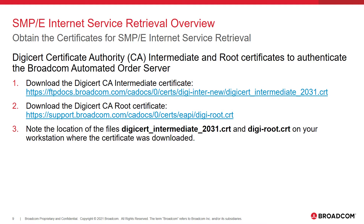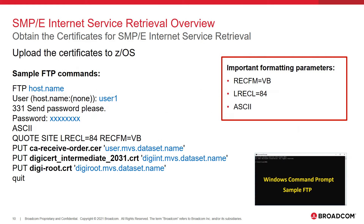Next, we will need to download the two server certificates by going to the two websites listed. These links will be provided in a text file that accompanies this presentation. Be sure to take note of the location of the certificate files on your workstation. It will make things easier during the upload process if all three certificates are in the same location. After downloading the three certificates, it is time to upload them to z/OS. You may choose whatever method you would like, but there are important formatting parameters to keep in mind. When uploading, be sure to specify recfm equals VB, lrecl equals 84, and ASCII. Here we also give you sample FTP commands that can be used in your favorite workstation terminal. Navigate to the directory where your certificates are stored and issue the following commands one at a time, substituting the blue fields for your own information.